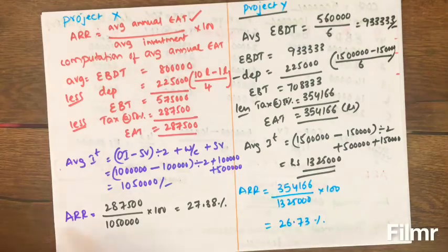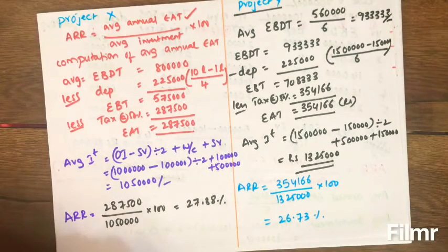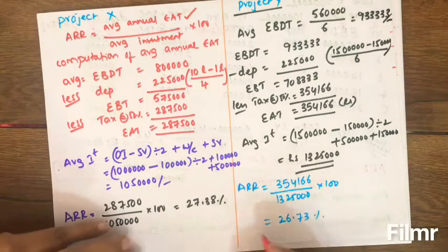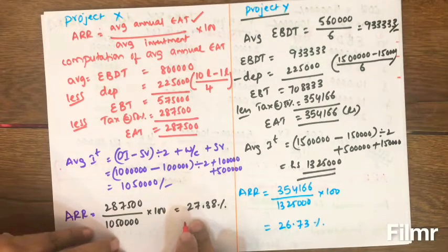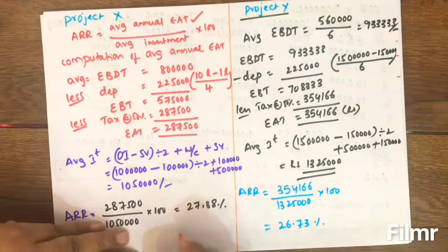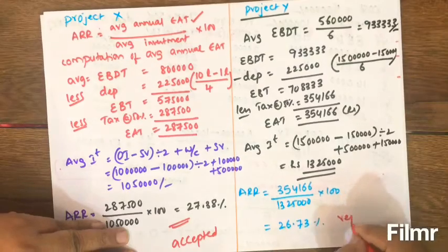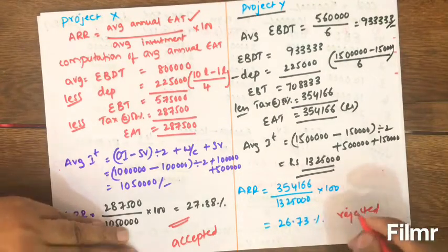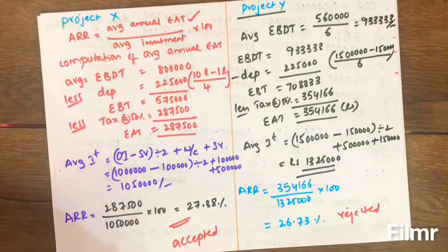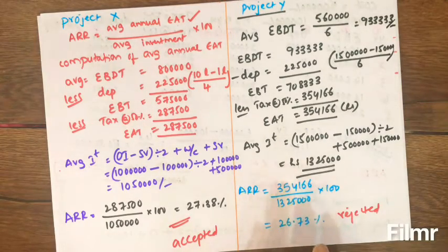We have to determine ARR for both projects and suggest which is acceptable. Using the accept-reject criterion — the higher the percentage return, the better. Project X gives 27.38% compared to Project Y's 26.73%, therefore Project X is accepted and Project Y is rejected. This is how projects are evaluated by financial managers applying capital budgeting techniques.